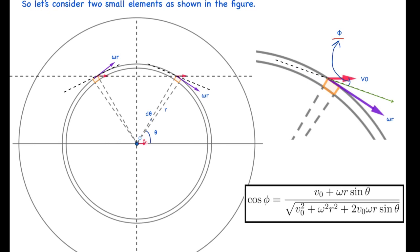On the second element, the friction force has the same magnitude at angle phi directed above the horizontal. The vertical components of friction on the two paired elements cancel out, and only the horizontal components survive. Using the parallelogram law, cos phi equals (v-naught plus omega-r sin theta) divided by the square root of (v-naught squared plus omega-squared r-squared plus 2 v-naught omega-r sin theta). Note that the angle involved is 90 minus theta, not theta — that's why we get sin theta here.